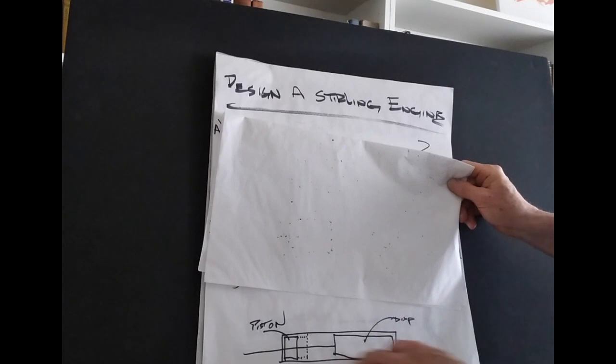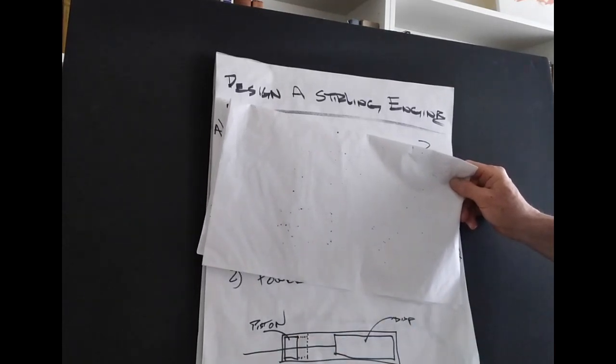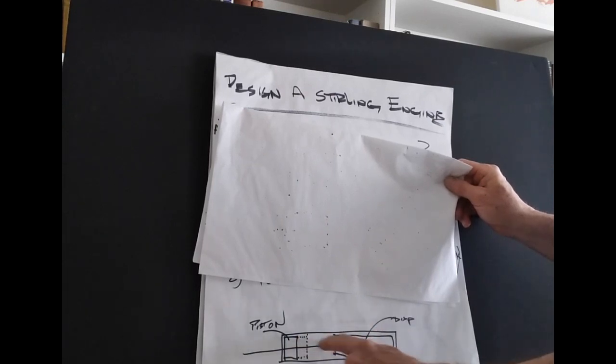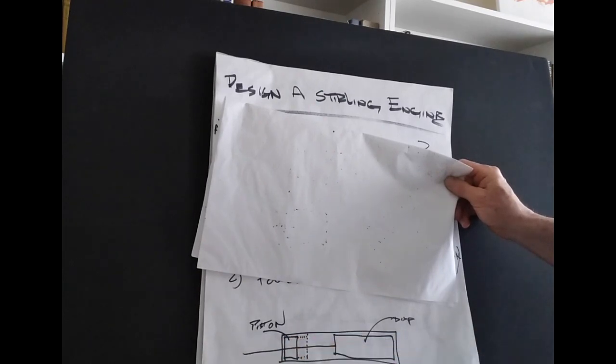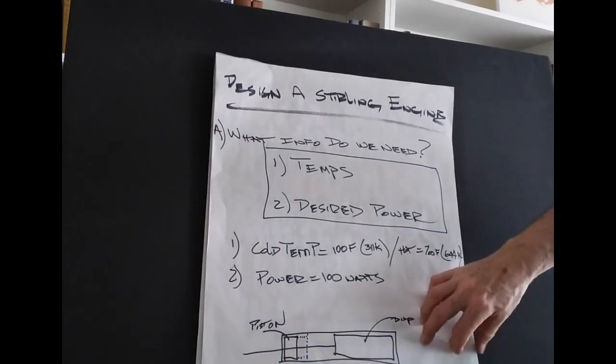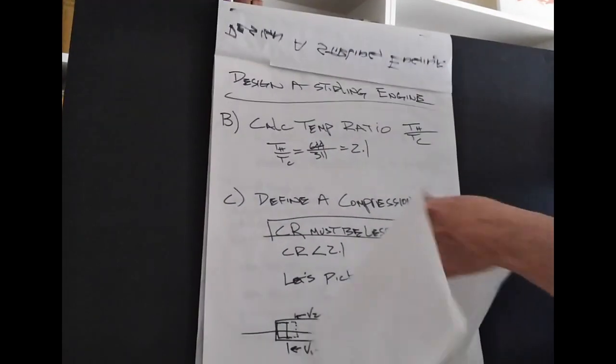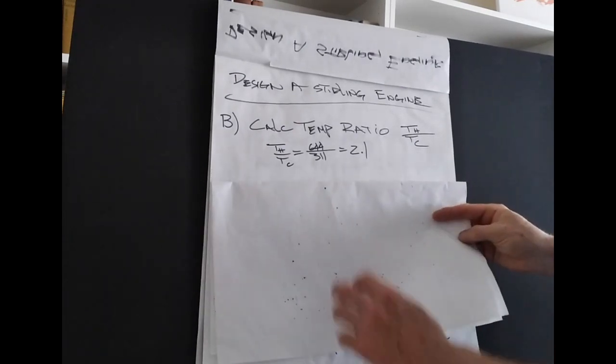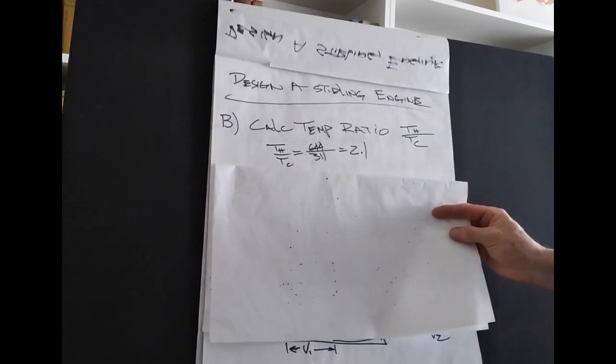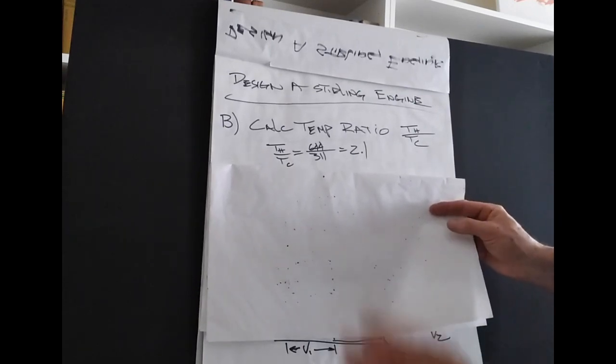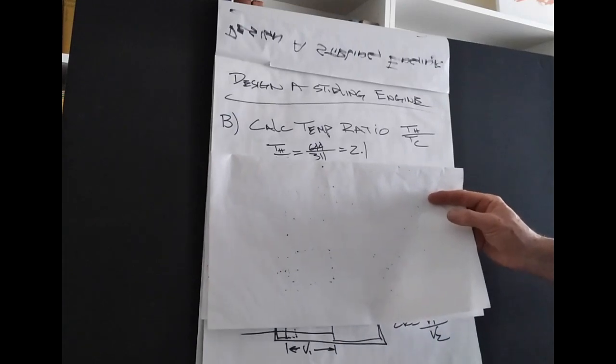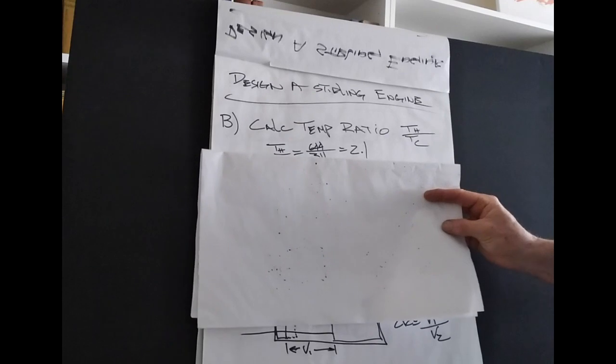And if we remember just our basic sterling engine, we're going to focus on using a beta style for this discussion. And basically, it's a tube. And in that tube, I have two pistons. One is called the displacer, which pushes the air back and forth. The other is called the piston. Now, once we have those inputs defined, the next thing we want to do is calculate what we define as a temperature ratio. And that is just basically the hot divided by the cold. So 644 divided by 311. Remember, these are in Kelvin. And we get a temperature ratio of 2.1. Now, we know our temperature ratio from the temperatures that we're using as input.